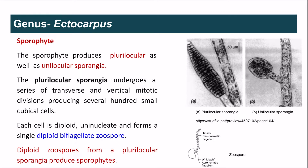Ectocarpus shows an isomorphic type of life cycle with two types of plants: gametophytic and sporophytic. The sporophytic thallus is diploid and contains two types of sporangia: plurilocular sporangia and unilocular sporangia. Plurilocular sporangia develop on the tip of a lateral branch; cells divide by mitosis in vertical and transverse rows forming small cubical cells, and each cell's protoplast metamorphoses into a single diploid, uninucleate, biflagellate, pyriform zoospore. These diploid zoospores germinate to form the same sporophytic generation.